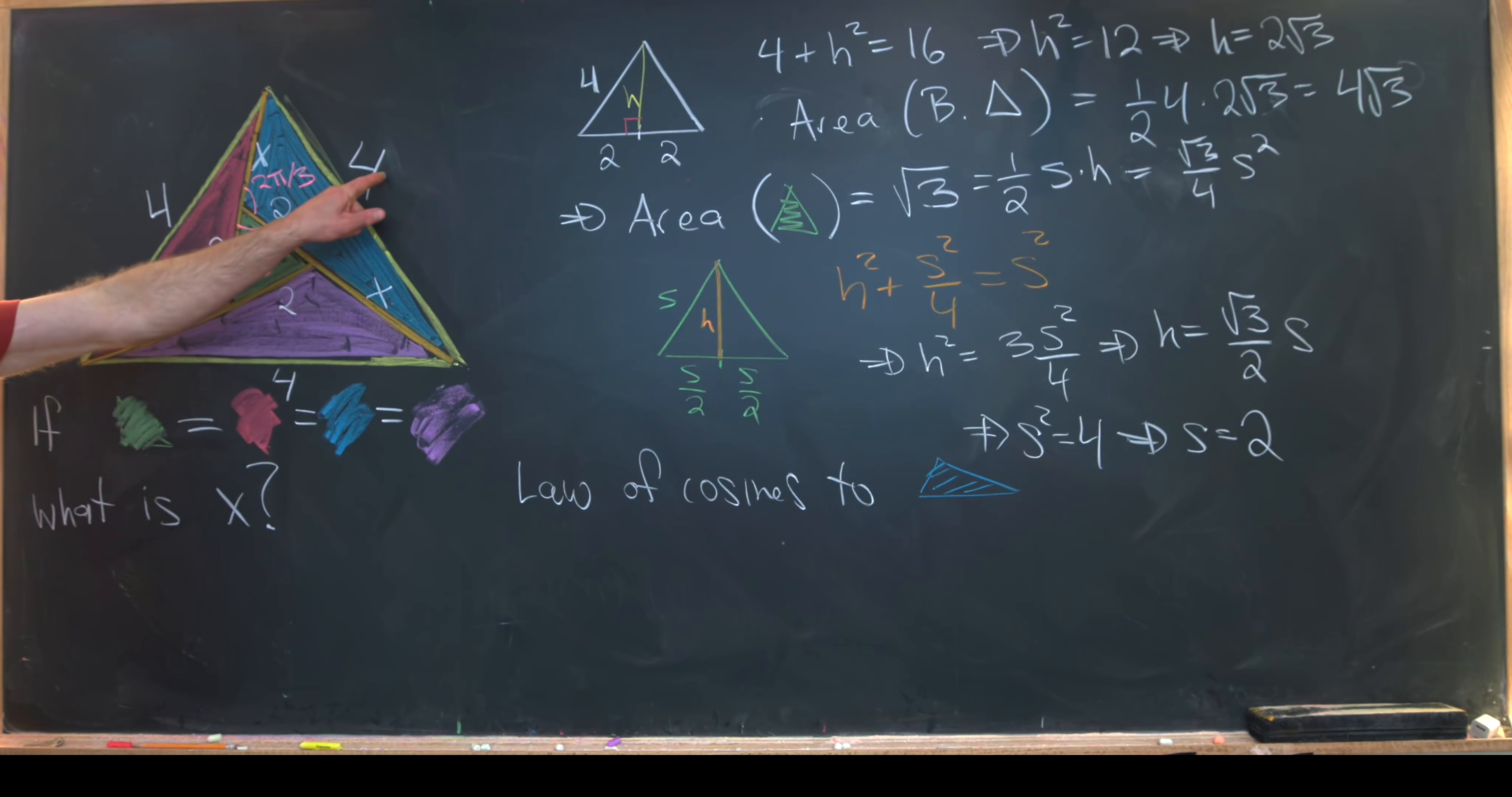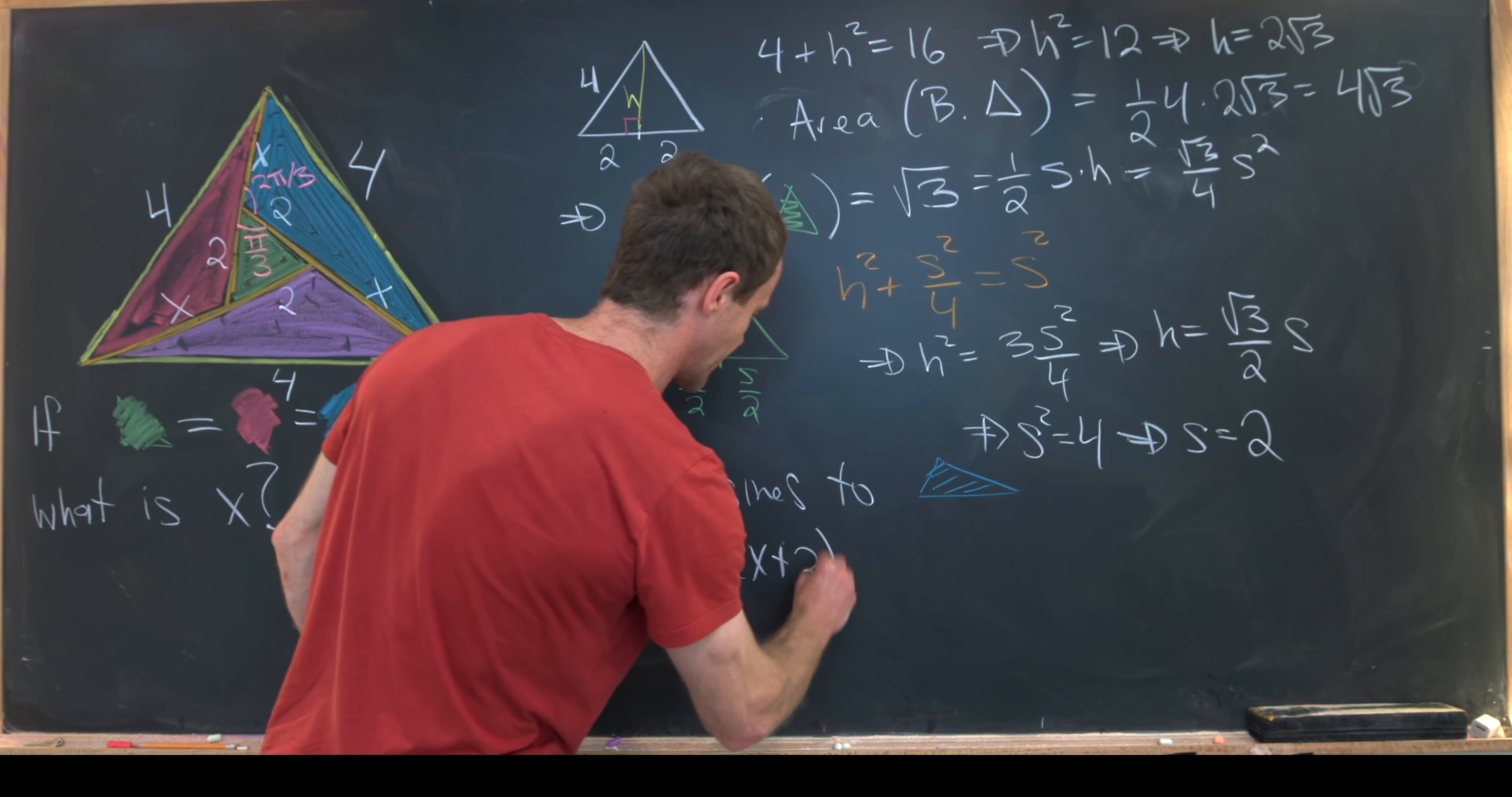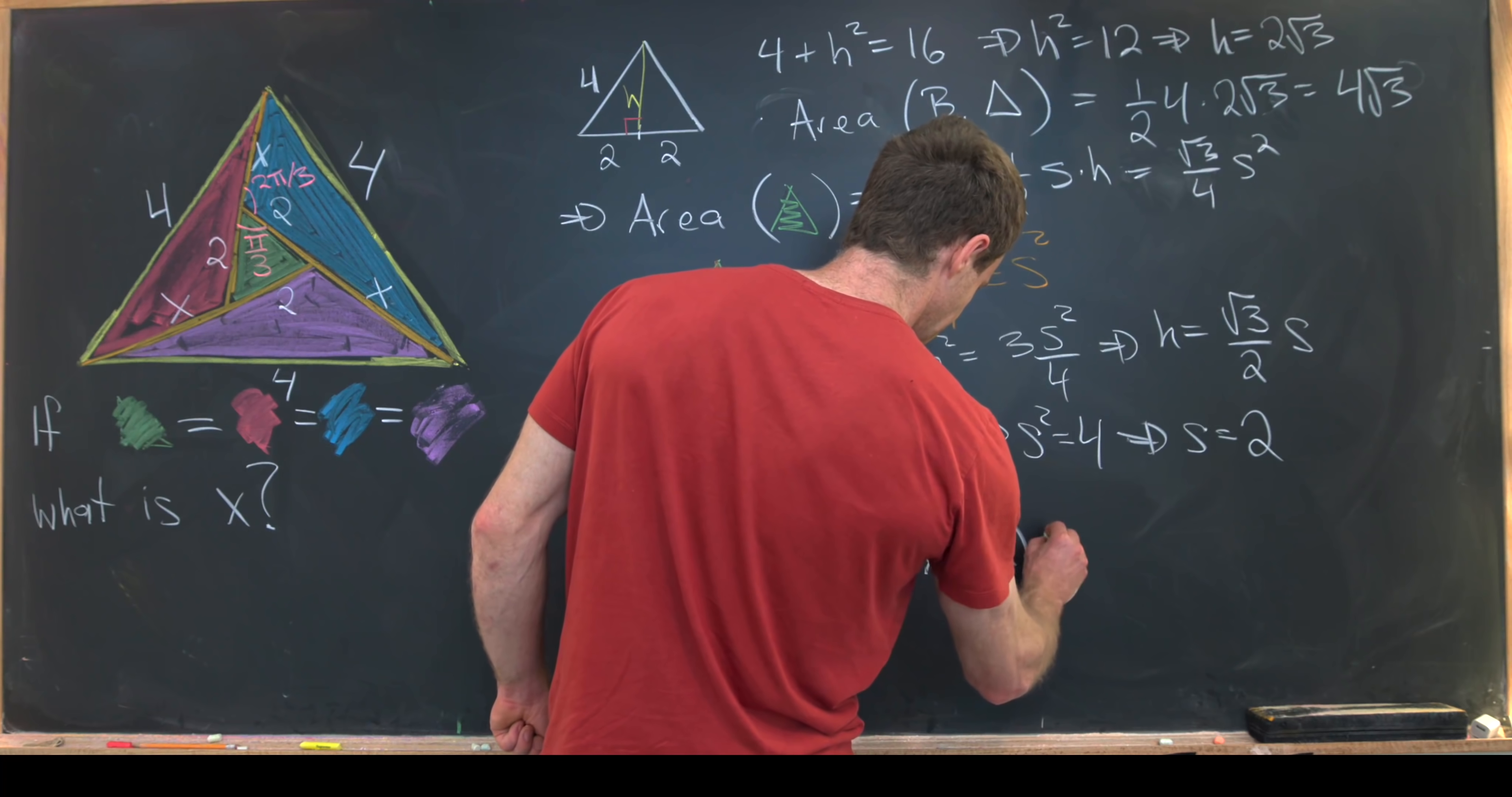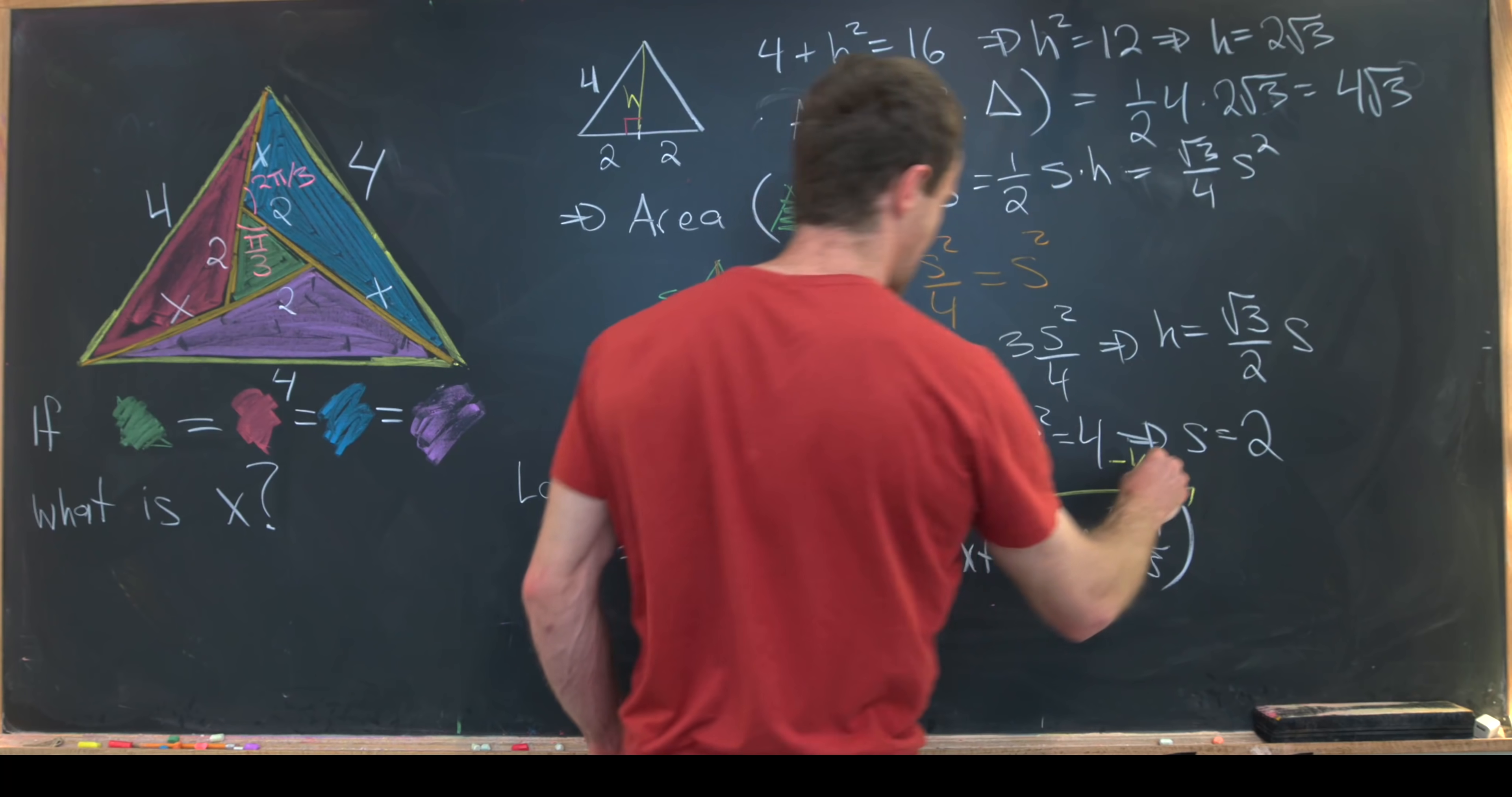So let's see. That tells us that 4 squared, which is equal to 16, will be equal to x squared plus x plus 2 squared. So at this point it looks like the Pythagorean theorem, but we need to do a correction because this angle right here is not a right angle. And so that correction involves subtracting 2 times x times x plus 2 times cosine of 2 pi over 3. But then let's recall that cosine of 2 pi over 3 is negative 1 half.